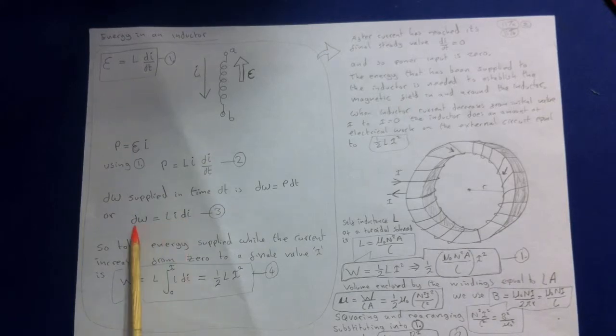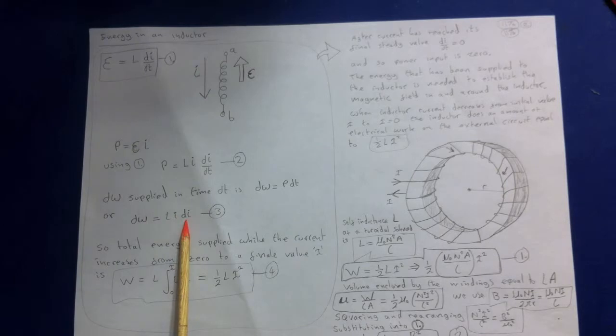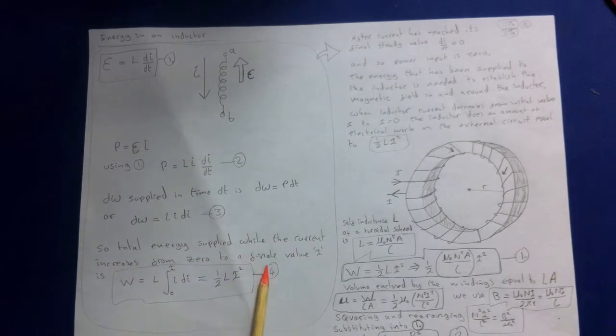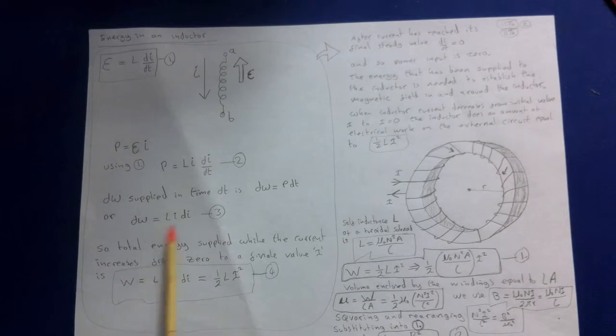Here we're going to look at what the total energy will be when the current goes from zero to its final current. So the total energy supplied while the current increases from zero to a final value, capital I, is going to be, we're summing all these terms up now, all the little dIs.